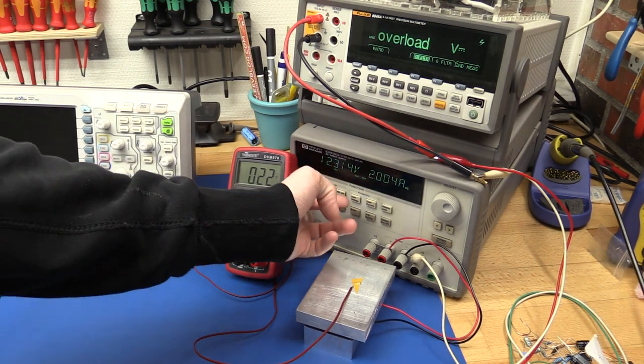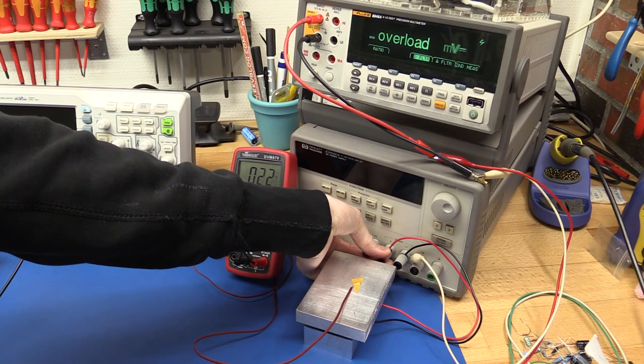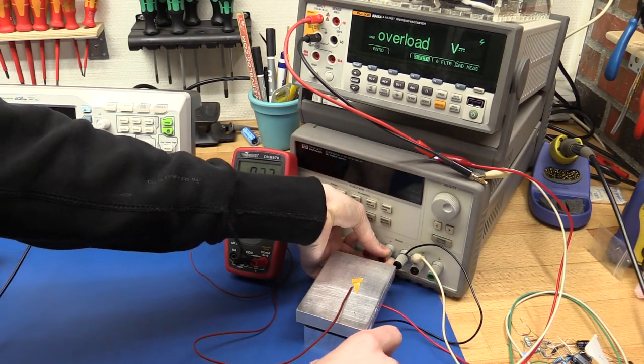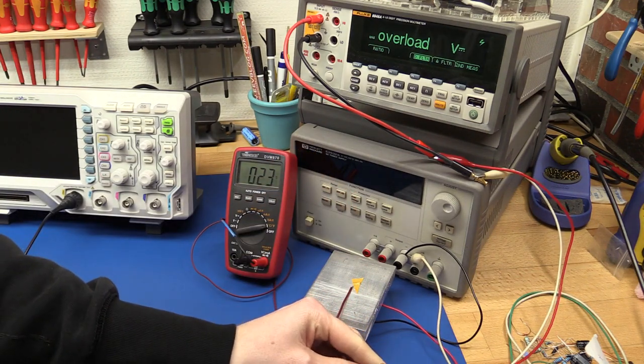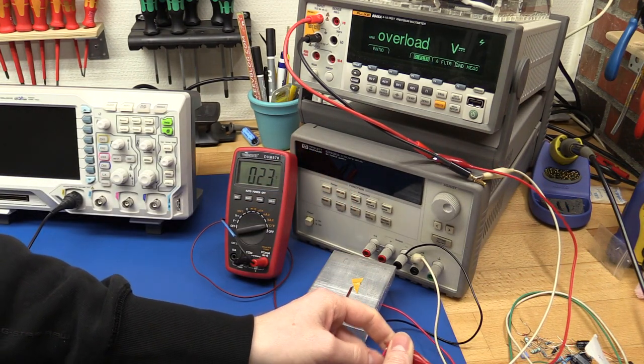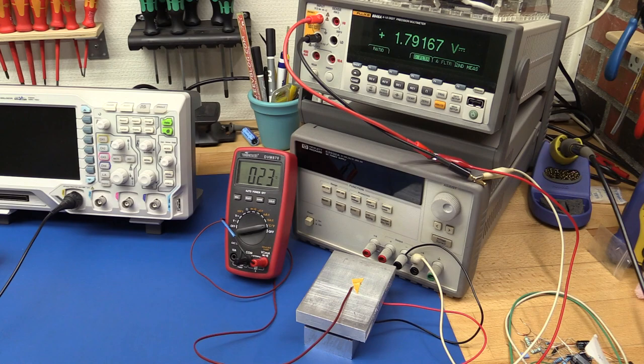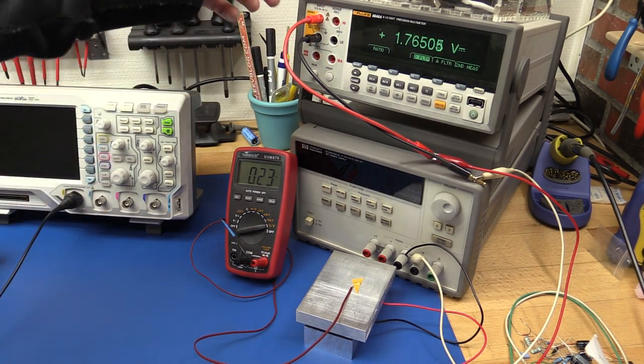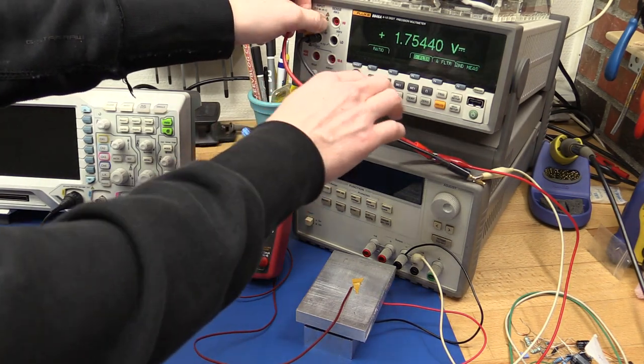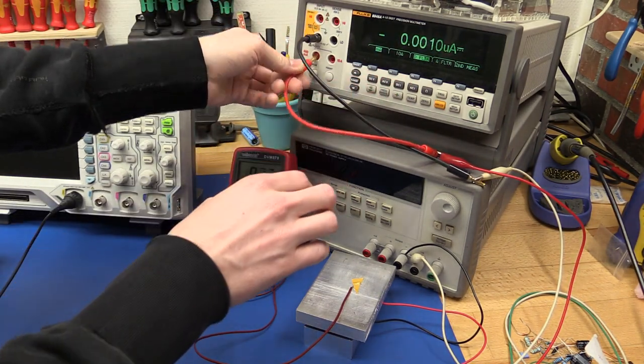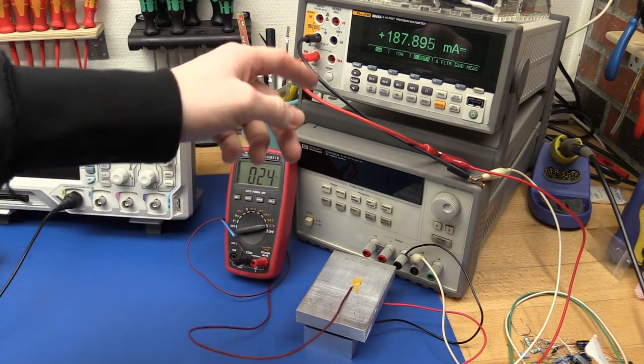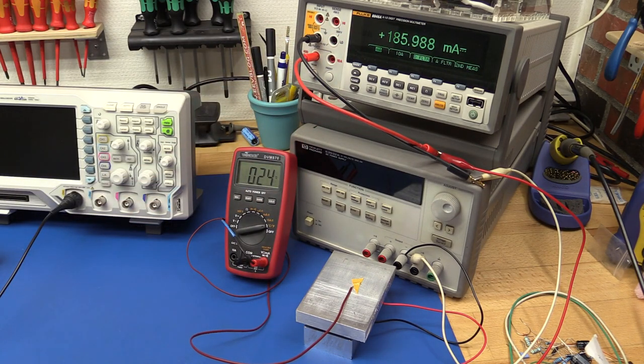If we cut the power and we instead measure the voltage across the Peltier element, you can see it's actually generating 1.8 volts. And we can check the current, and you can see it's actually 200 milliamps. It's a fairly low voltage but we can actually pull a decent amount of current out of it.